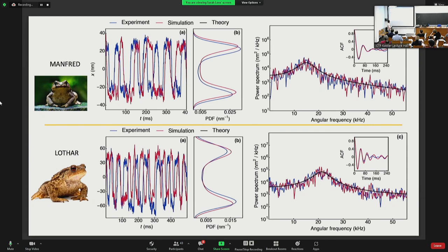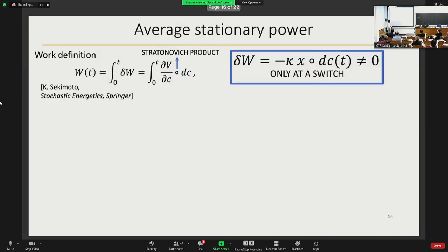We do this with other two species, Manfred and Lotha. Also here we find good agreement. We fit this with a symmetric model, but of course in general these are not symmetric, but still we get really good agreement at this level of approximation.